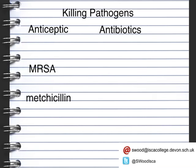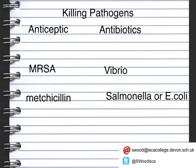Cholera is caused by a bacteria called Vibrio, and if you can remove that, you can actually get rid of the cholera. Food poisoning is caused by Salmonella or E. coli, which are probably things you've heard of. Athlete's foot, which is a fungal infection, is caused by Trichophyton.